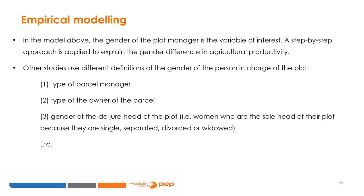The gender of a plot's manager is the variable of interest. A progressive approach is applied to explain the gender differences in agricultural productivity. Other studies use different definitions of the gender of a plot's manager. Some examples are the gender of the plot manager, the gender of the plot owner, and the gender of the plot head — for example, women who are the sole head of their plots because of being single, separated, divorced, or widowed.